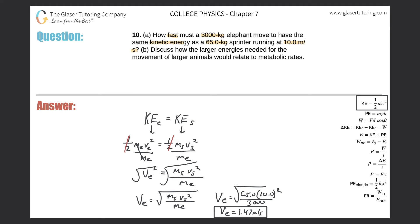So that's what part B says, discuss how larger energy is needed. So again, to move this elephant just by this speed of 1.47 meters per second, it would take the same energy as it would for a sprinter to move at 10 meters per second.